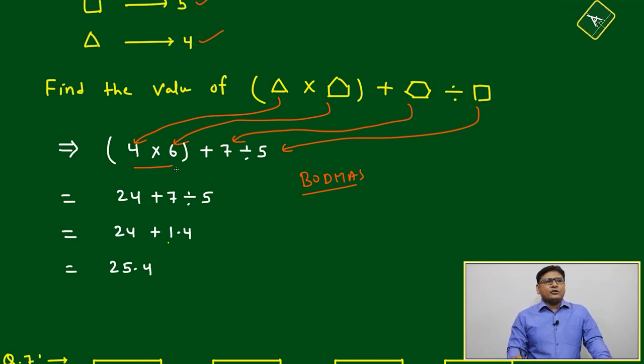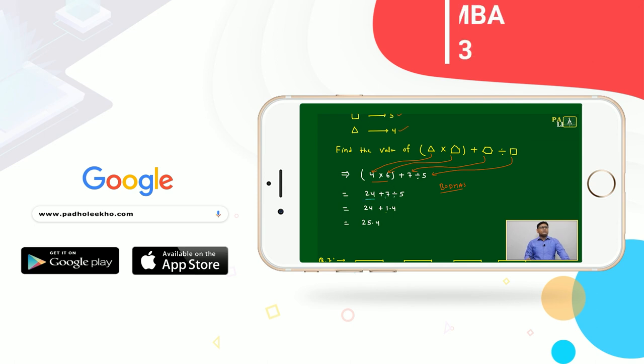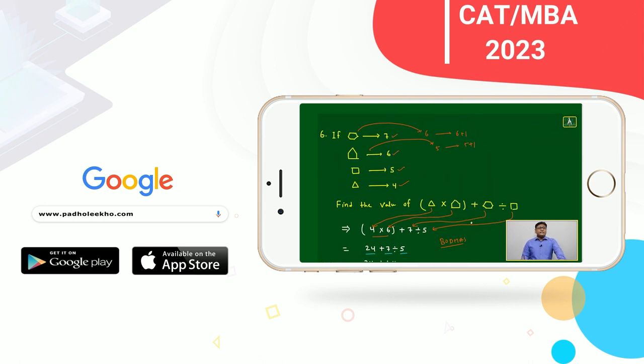Here, first the bracket: 4 times 6 equals 24. Then it will be plus 7. Afterward we do the division, then addition. The answer is 25.4.